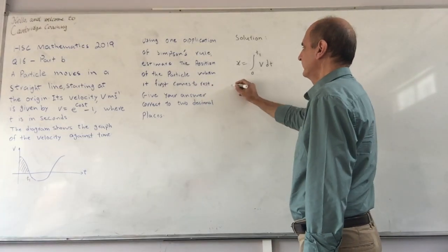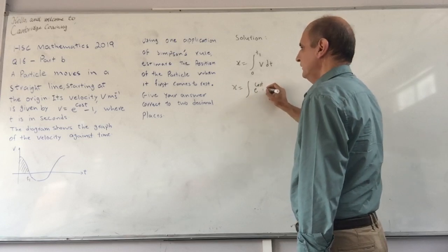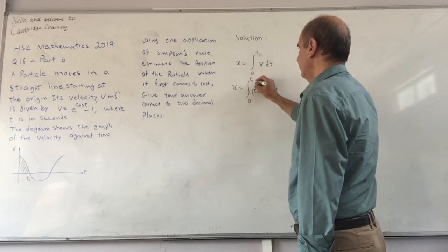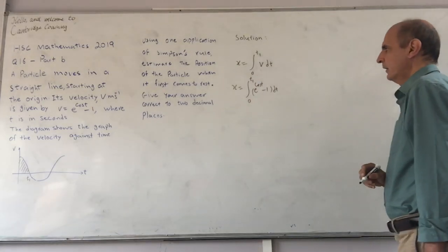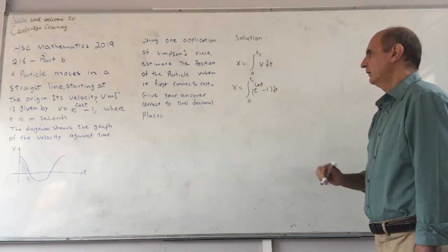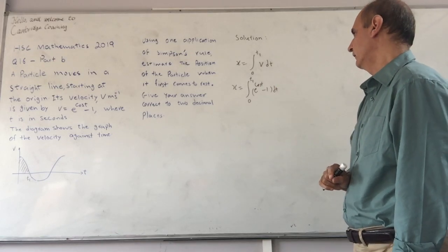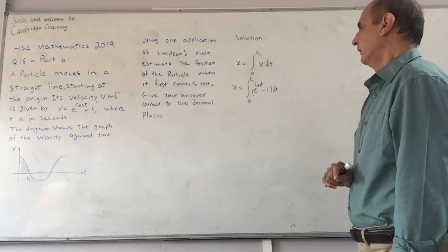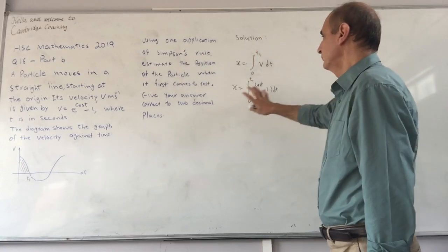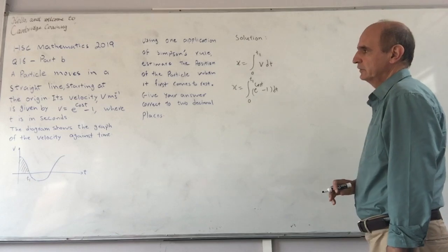But v is given by that expression: e to the cos t minus 1, dt from 0 to t1. The problem is evaluating that integral will not be that easy at this level of mathematics. So that's why they have asked us to use Simpson's rule to find an approximation for this.